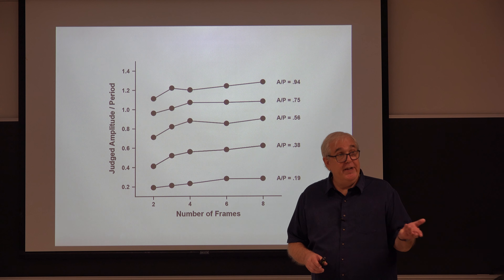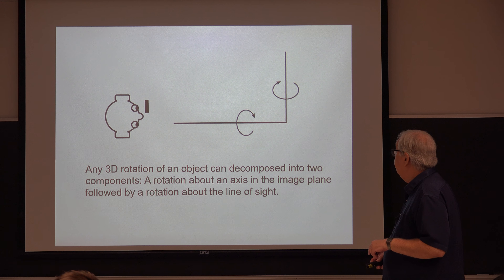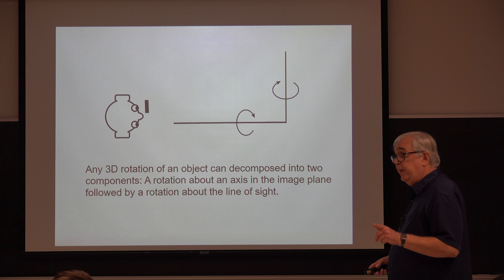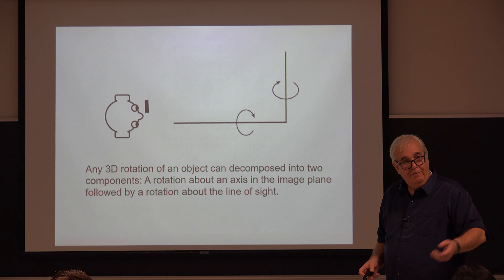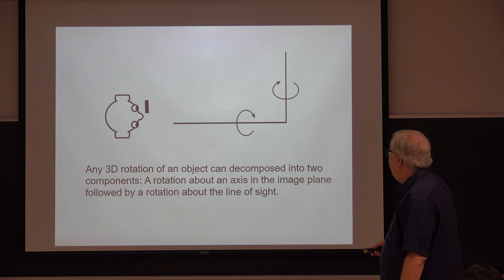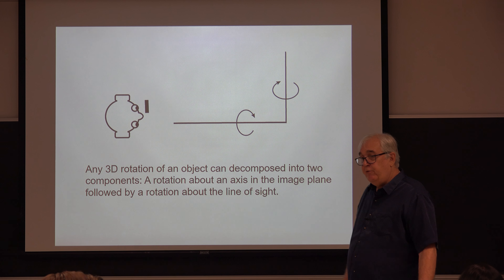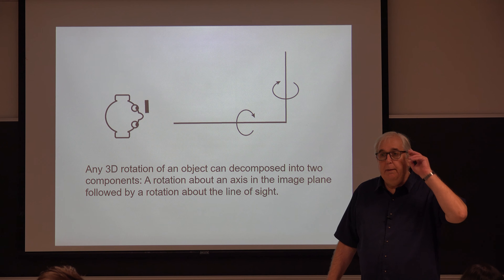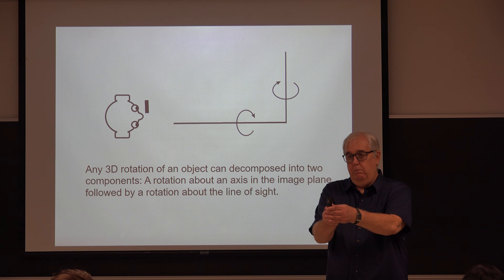It turns out Ullman had actually studied the two-view case. He published it in his thesis but didn't include it in the officially published journal version. Here's what Ullman did — it's a very clever analysis. There's a famous proof by the mathematician Euler, where Euler showed you can take a rotation about any axis and decompose it into a rotation about any two other axes.